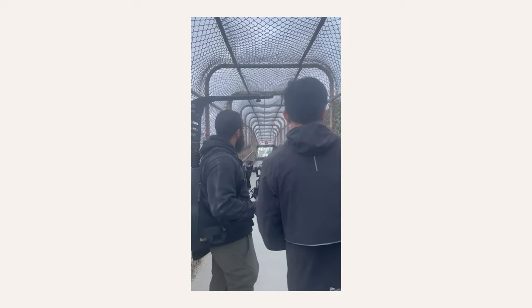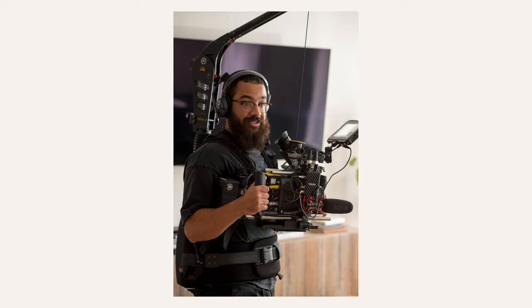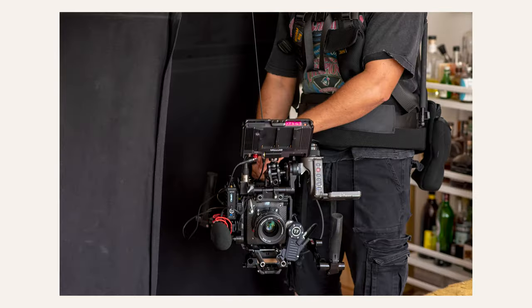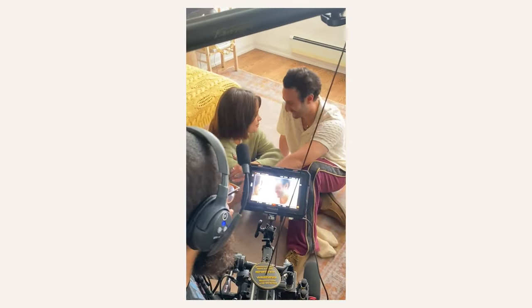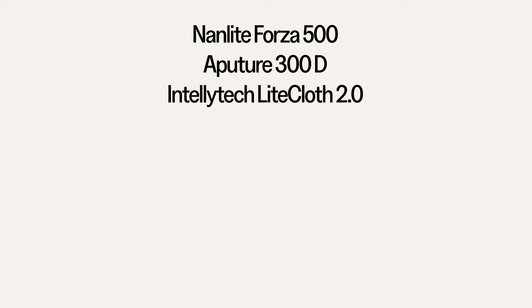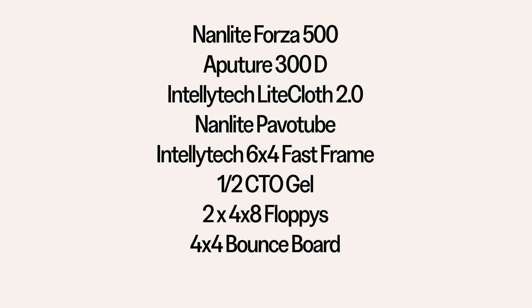For this project we were going for a vintage look and wanted to experiment with some lenses we hadn't tried before. We shot this on an Arri Mini paired with the Zeiss SuperSpeed Mark 3s. Across the set these lenses have a T-stop of 1.3 and we generally kept them wide open for the majority of the project. This project was all shot handheld, so we used our in-house easy rig paired with our shape handles. For lighting we used our in-house personal kit: a Forza 500, an Aperture 300D, an Intellitech Mega Light Cloth, an Nanlite Pavo Tube, a 6x4 scrim, some CTO gels, two 4x8 floppies, a 4x4 bounce board, and all the needed grip and stands.